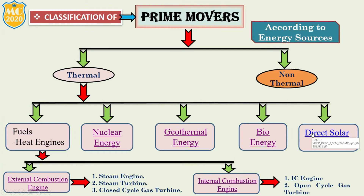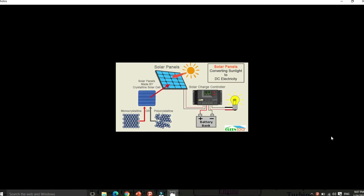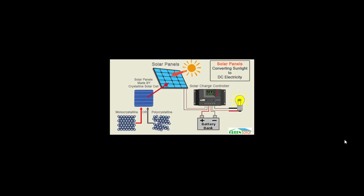The last thermal category is direct solar energy. It is an important source of renewable energy. Direct solar energy is used for water heating, distillation, drying, and solar thermal energy applications.